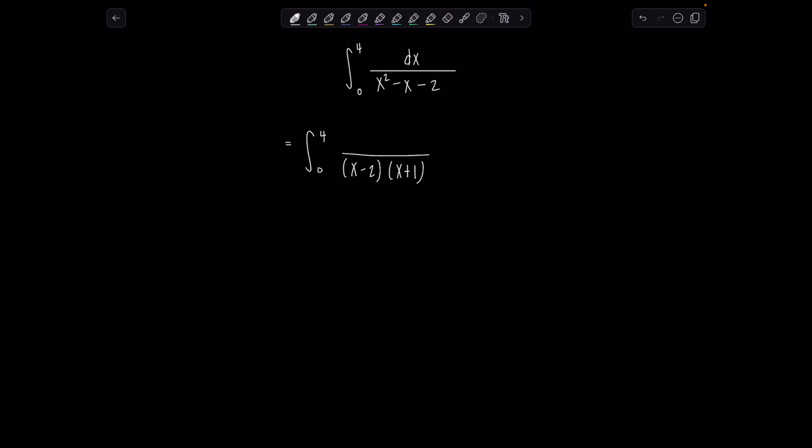And then we have that dx still upstairs. So I notice the integrand is discontinuous whenever the denominator is 0. So that would be at x equals positive 2 and at x equals negative 1. Now look at our limits of integration. They're from 0 to 4. So the only point of discontinuity that's relevant in this problem is that x equals 2 because negative 1 is outside of the limits of integration.